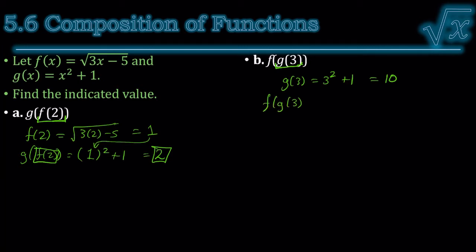Now, f of g of 3 is the same thing as f of 10, because g of 3 is 10. Square root of 3 times 10, minus 5. Or, 30 minus 5 is 25, and that gives you 5.